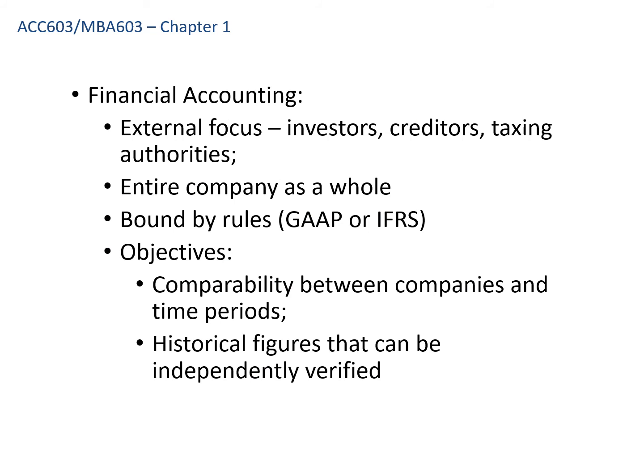Financial accounting has an external focus — supplying information to investors, creditors, taxing authorities, and management, primarily so management knows how those judging them will view them. It's backwards looking — historical, covering what happened last quarter or last year. Reporting is usually done for the whole company. Most of you are familiar with generally accepted accounting principles; the method for reporting financial performance to external users is guided by those rules.